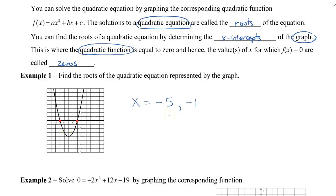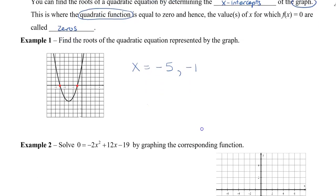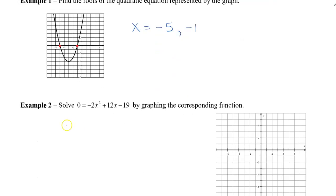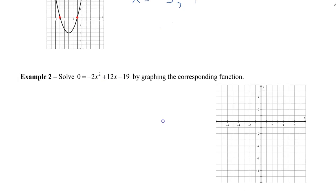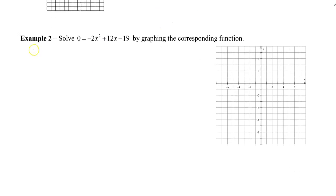But what happens if I don't give you the graph, but you have only a function here or an equation? So in example 2, we have 0 equal to this quadratic. So we don't have the graph, but I would like you to graph to find the solution. Now in order for us to graph, because it's in standard form right now, we need to change it to vertex form. So let's go through that process. I'm going to rewrite this as f of x equals to negative 2x squared plus 12x minus 19. So I'm going to graph the function.